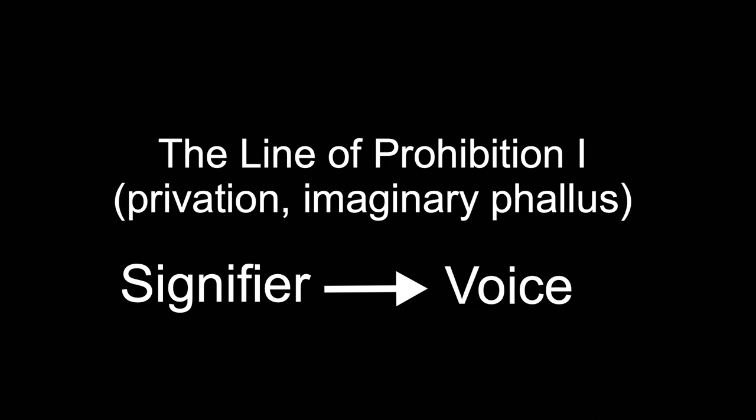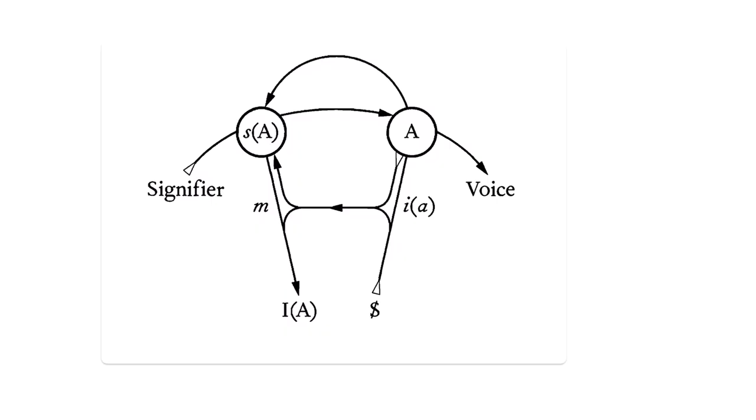Returning to the signifying chain, we have what can now be called the line of prohibition. This line passes through the message and the big other. There are two implications of this.